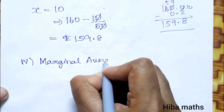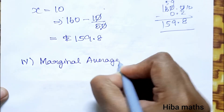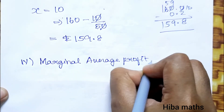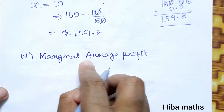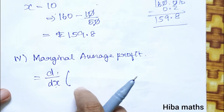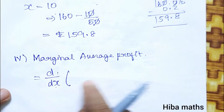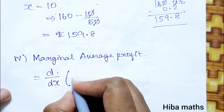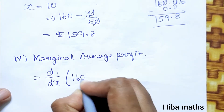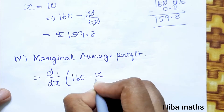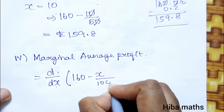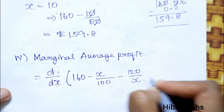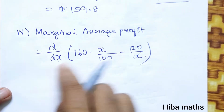Fourth, the marginal average profit is found by differentiating the average profit function with respect to x. Average profit = 160 - x/100 - 120/x.